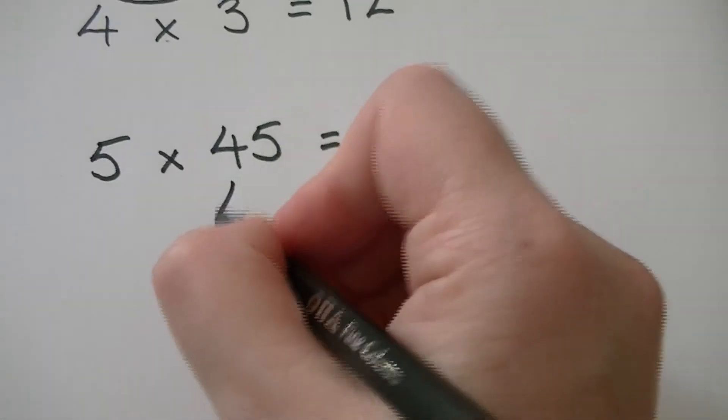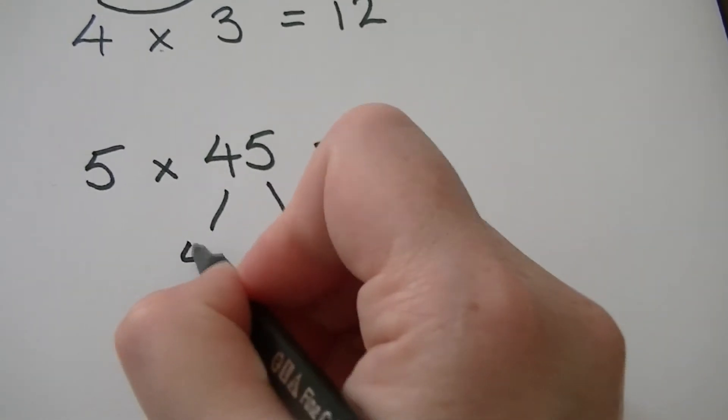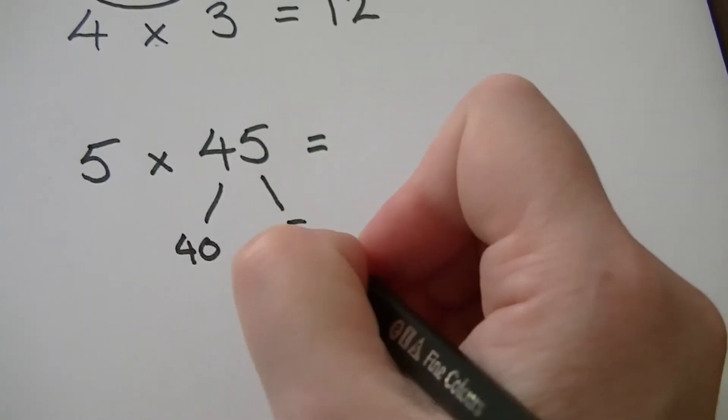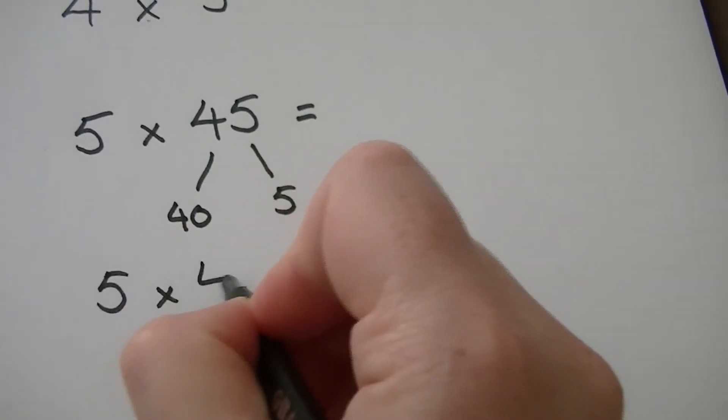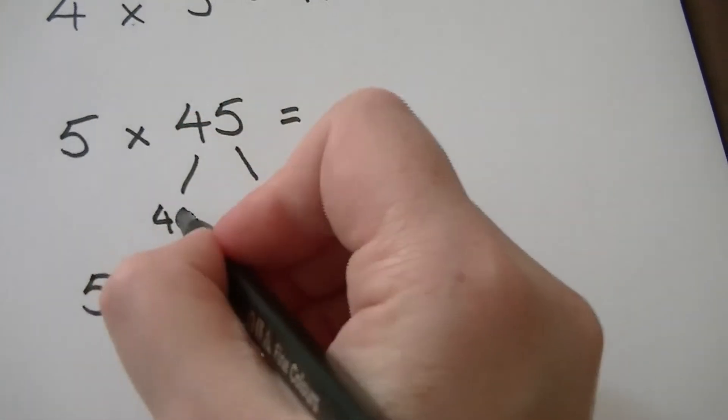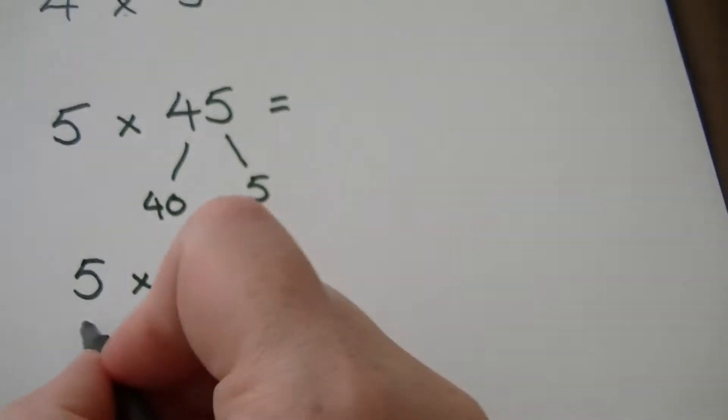Partition the two-digit number: 40, 5. Write out the two new multiplications. So we've got 5 times 40 and 5 times 5.